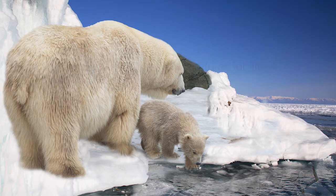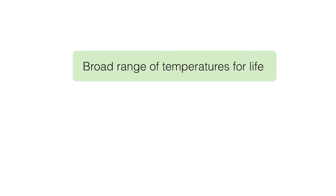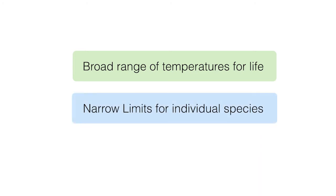There are two sections based on this dot point. Firstly, we have to recognise that there is a broad range of temperatures for life — we can find life in a very broad temperature range, from the cold freezing temperatures in the Arctic and Antarctic to the very hot weather present in the tropics. Secondly, we need to understand that there are narrow limits for individual species. Some animals, like polar bears, love the freezing Arctic cold, while other organisms, such as a cat, will struggle in those temperatures. We'll look at some of the scientific explanations for why that is.